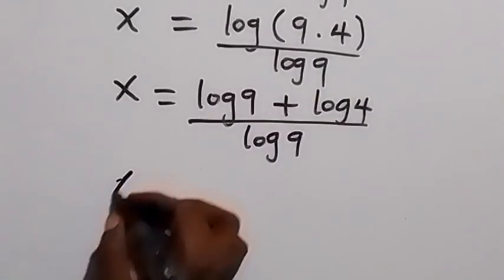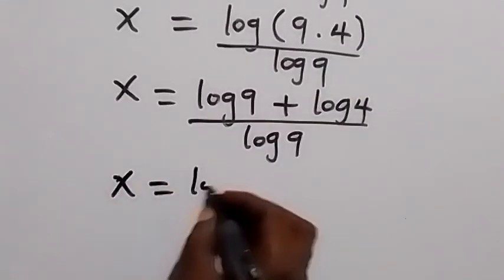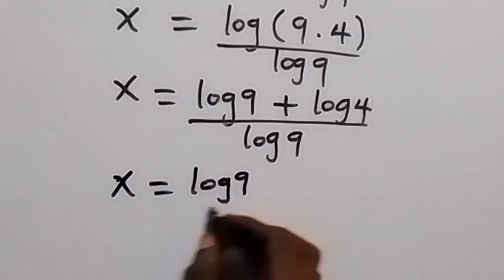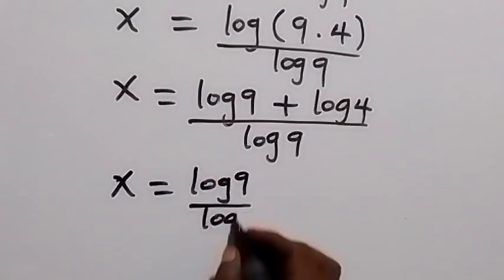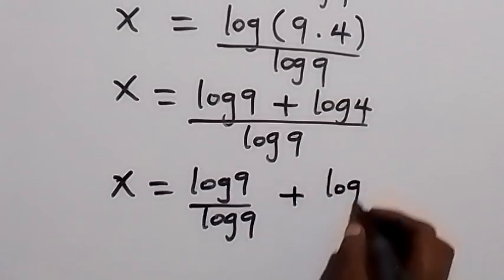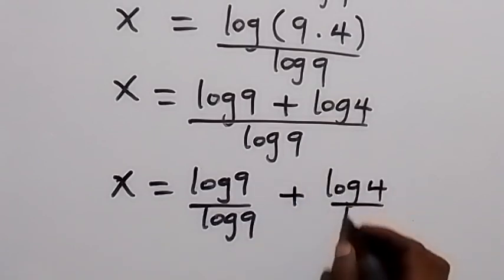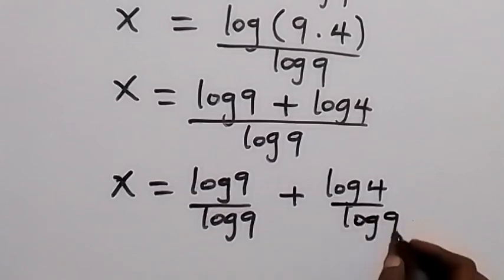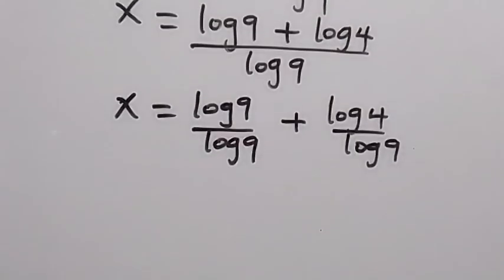In the next step, we write this as x equals to log 9 divided by log 9 plus log 4 divided by log 9. We separate this log, and log 9 divided by log 9 here gives us 1.